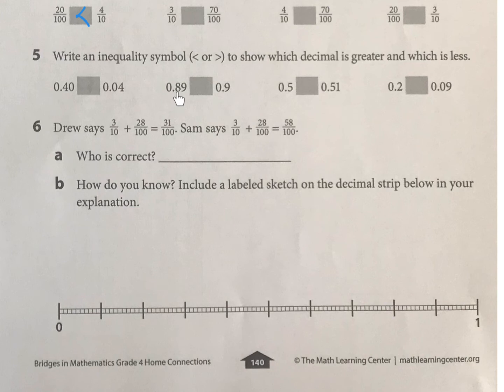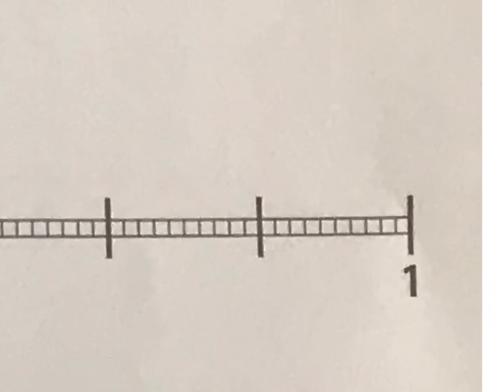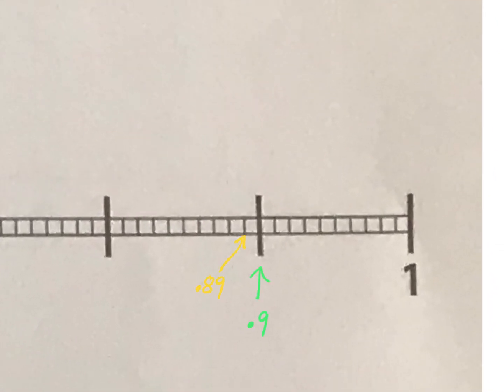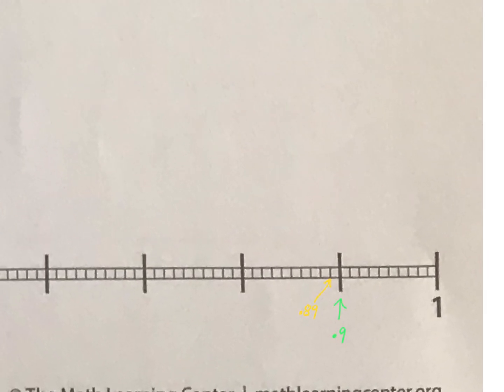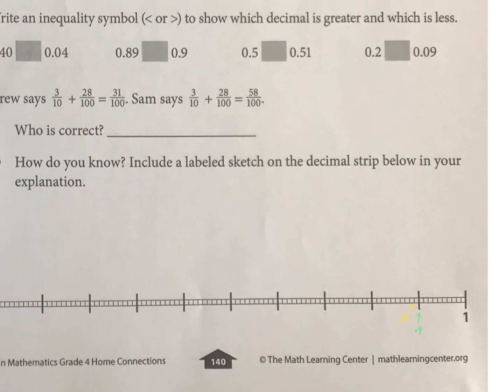This is 89 hundredths and this is 9 tenths. So on the number line, if we looked at that, we're zooming all the way in here. 89 hundredths is there and 9 tenths is there. So which one is greater? And how would you fill that in up here?